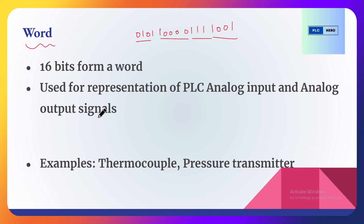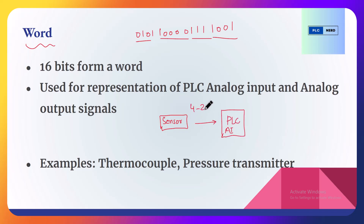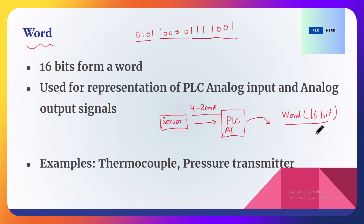For example, we have a thermocouple sensor interfaced with our PLC analog input card. Whatever milliamperes are coming from the sensor to the PLC analog input channel, the PLC will transform the 4–20 milliampere DC signal to a word — in other words, to a 16-bit value. Those 16 bits can then be further manipulated in our PLC program.